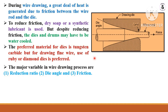The major variables in the wire drawing process are: first, the reduction ratio or diametrical reduction ratio; second, the die angle; and third, the friction between the raw material and the inner surface of the die. You must control these three variables to increase the effectiveness of the process, the quality of the product, and the life of the die material.